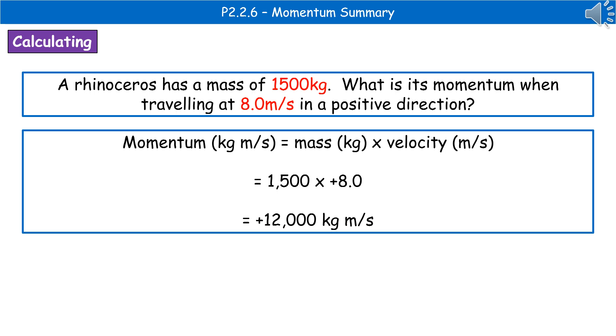So we've got the two bits in red there for us. Then we need to jot down the formula to calculate momentum, which is mass times velocity. Check the units are in the correct units, so we're in kilograms and meters per second, so we're all good this time around. And then substitute those values in. So 1,500 times positive 8 gives us plus 12,000 kilograms meters per second.